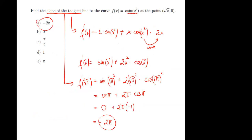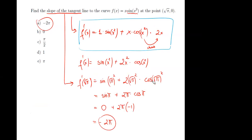Another slope of tangent line problem: x times sine(x squared). We have a product, so use the product rule; and for sine(x squared) we use the chain rule. Derivative of x is one times the second function, plus x times the derivative of sine(x squared). Derivative of sine(x squared) is cosine(x squared) times 2x by chain rule. Remember the chain rule, product rule, and unit circle values.